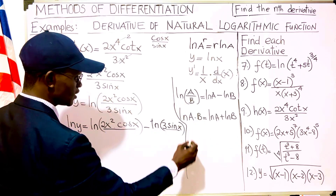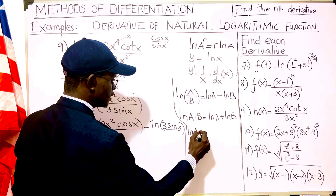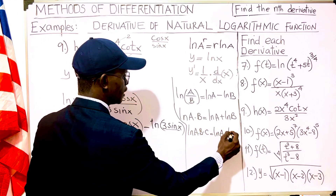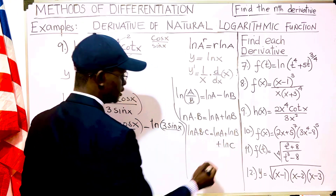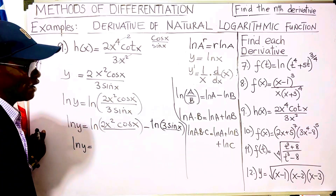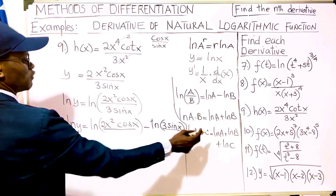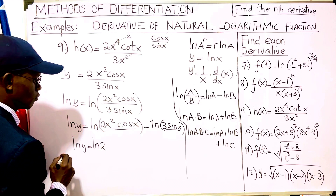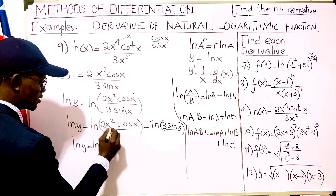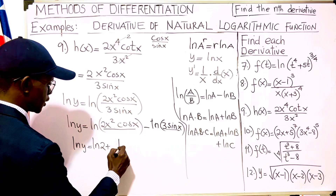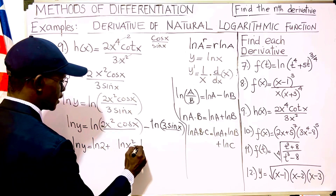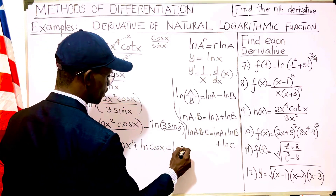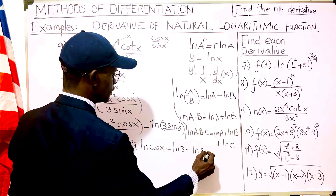We use the rule that ln(a·b·c) equals ln(a) plus ln(b) plus ln(c). So no matter how many factors you have, you take the sum of the ln of each factor. We get: ln(2) plus ln(x squared) plus ln(cos x), minus ln(3), minus ln(sin x).